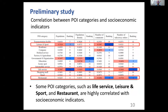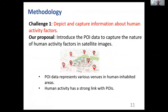This table displays the result with the top three POI categories for each socioeconomic indicator colored in blue from darkest to lightest. We can observe that the POI data, especially some POI categories such as leisure and sport, life service, and restaurant, are highly correlated with socioeconomic indicators. Based on this preliminary study, we address those three challenges through three key designs.